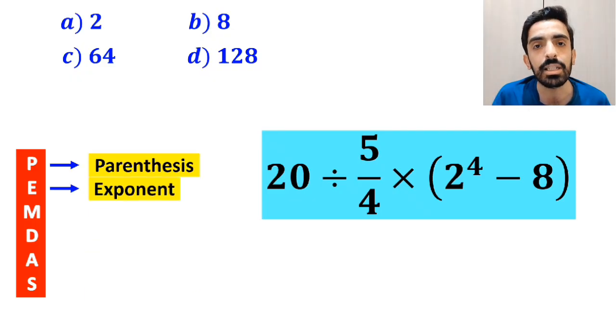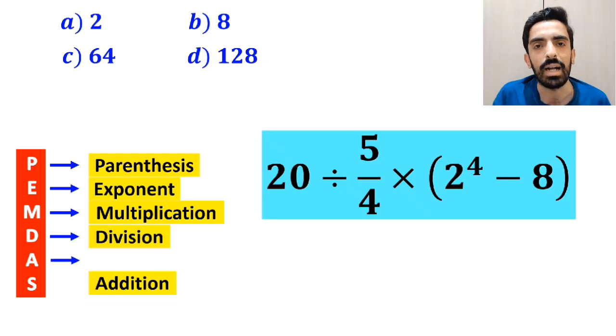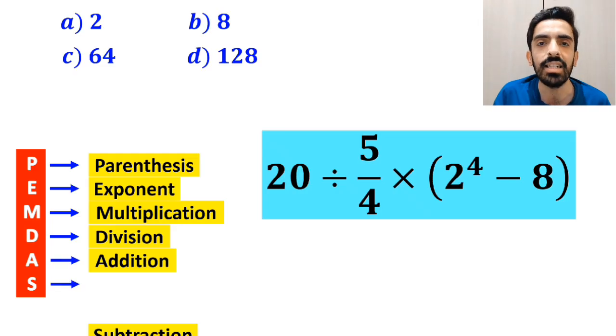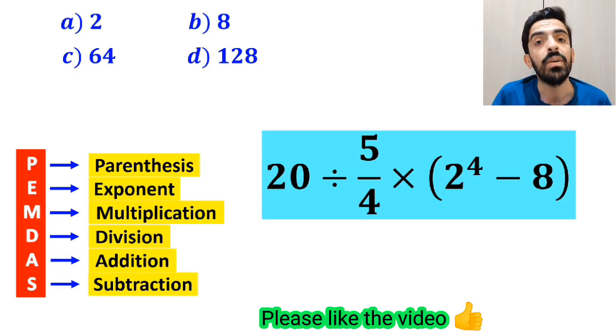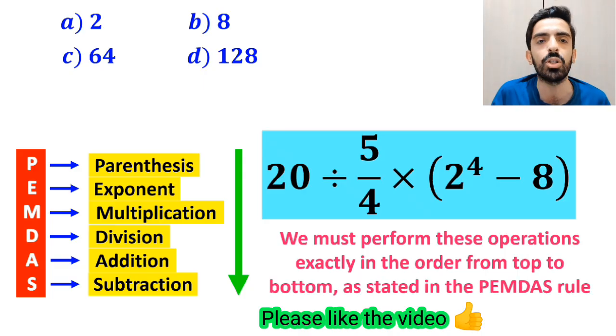E stands for exponent, M stands for multiplication, D stands for division, A stands for addition, and S stands for subtraction. We must perform these operations exactly in order from top to bottom as stated in the PEMDAS rule.